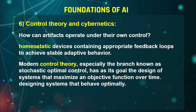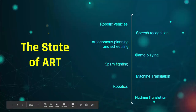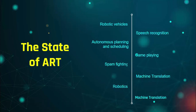Modern control theory, especially the branch known as stochastic optimal control, has the goal of designing systems that maximize an objective function over time — designing systems that behave optimally. Control theory is entirely related to optimization. Now we have different state-of-the-art examples of AI. Right now artificial intelligence includes: robotic vehicles, speech recognition, autonomous planning and scheduling, game playing, spam fighting, machine translation, and robotics.